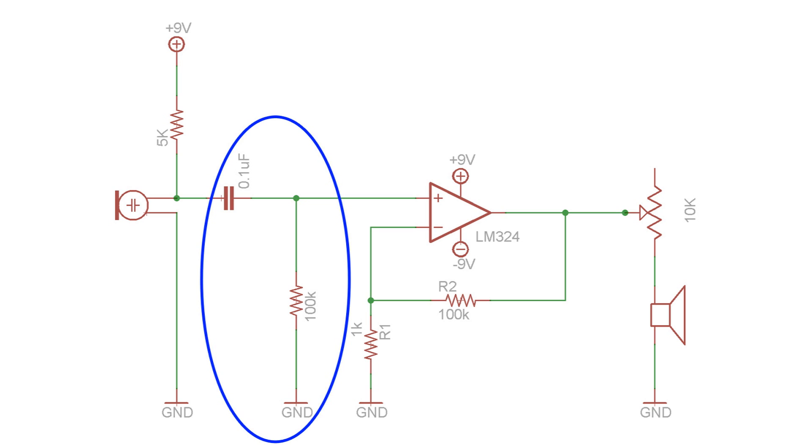This part of the circuit is called a high-pass filter, and it removes any DC voltage coming out of the microphone to make sure that we are only amplifying a pure AC audio signal.